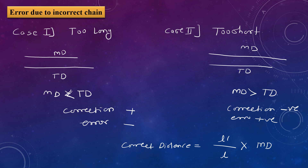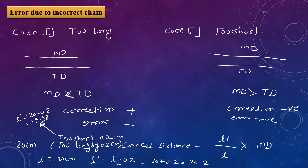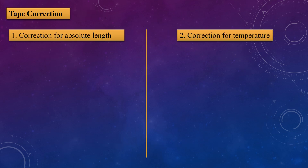For example, if the true length of the chain is 20 cm and the chain is too long by 0.2 cm, then l = 20 cm and l' = 20 + 0.2 = 20.2 cm. If the chain is too short by 0.2 cm, then l' = 20 − 0.2 = 19.8 cm. These are the l' values for too-long and too-short conditions.